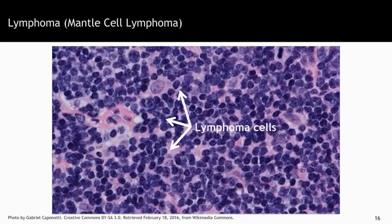This ends our section on cancer terms and definitions, where we explained what cancer is, where it starts, and gave you some examples of what cancer looks like as it starts in those various organs. We are now going to move on and talk about the incidence of some of these cancers.